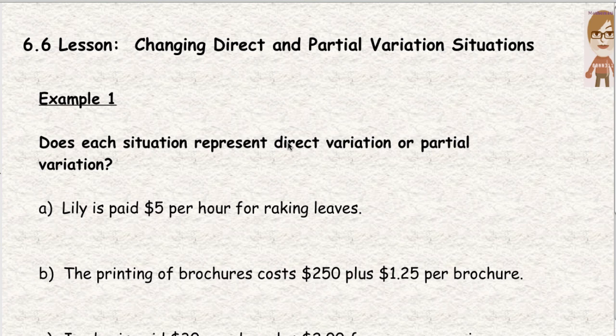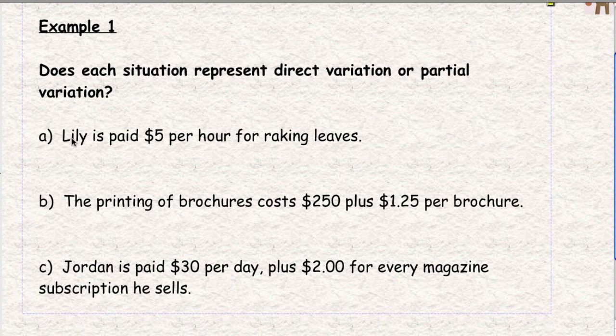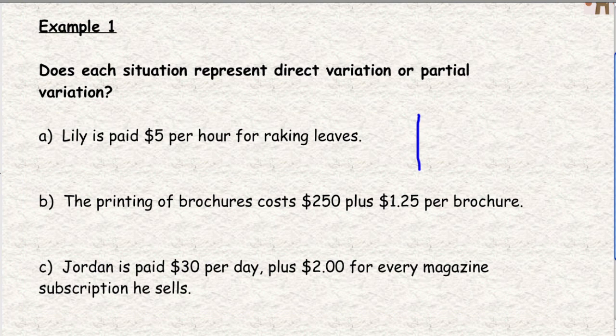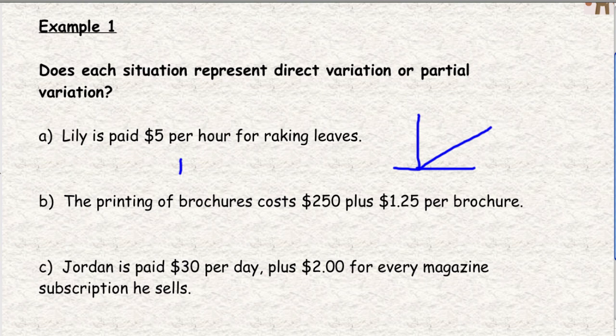Lily is paid $5 an hour for raking leaves. If there is no initial value, if there is no flat fee that she's paid, it's just a rate. $5 per hour is a rate. Just when you just have a rate, that means that line would start at zero. So if we were going to graph this, her line would start at zero and go up from there. If she's paid $5 an hour for raking leaves, that must be direct. There is no flat fee where her line would start up higher.